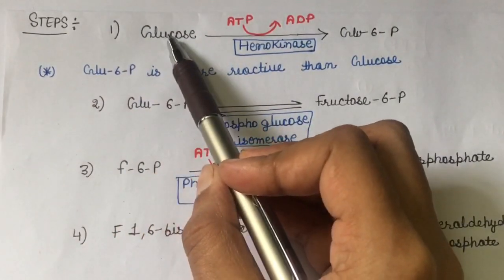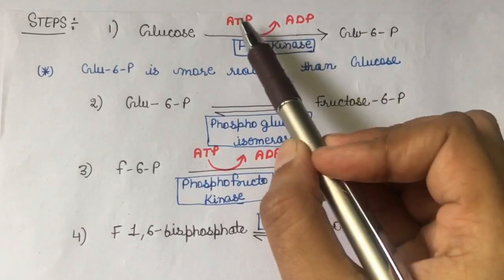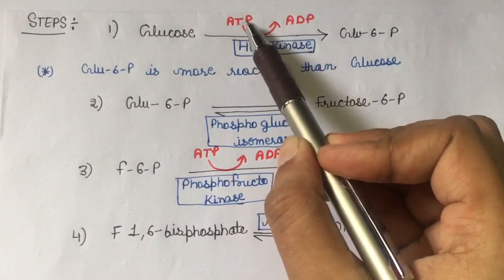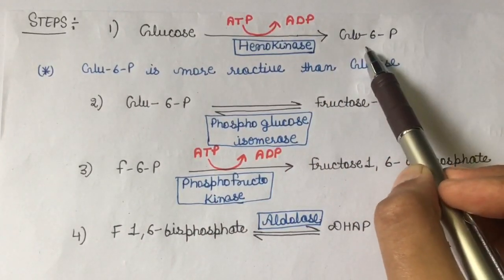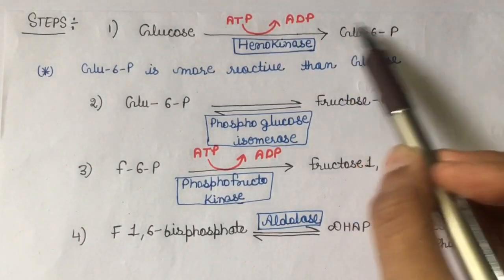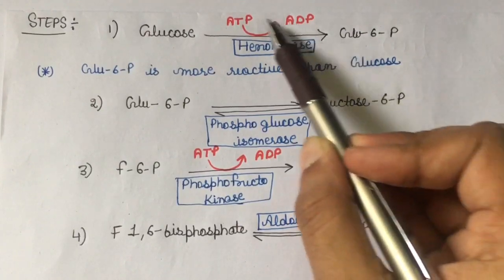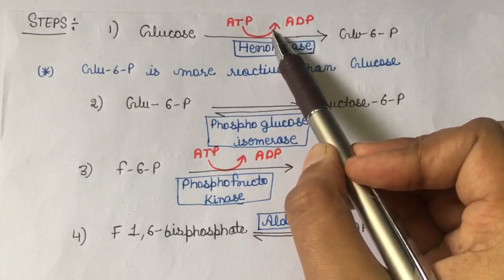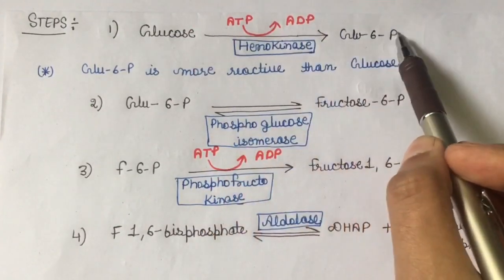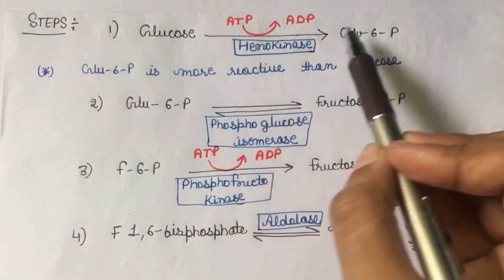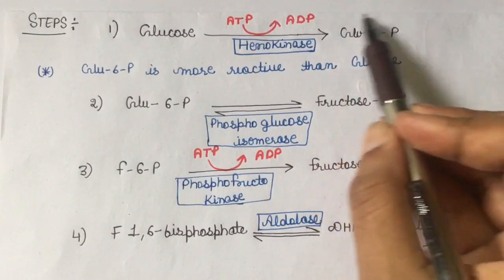In the very first step, glucose is converted into glucose-6-phosphate with the help of the enzyme hexokinase, and here ATP is used. One phosphate from ATP is added to glucose, so it becomes glucose-6-phosphate — a phosphate is attached at the 6th carbon position of glucose. This is done by hexokinase, wherein hexo means 6, and kinases are enzymes that catalyze phosphorylation reactions, meaning they attach a phosphate onto the substrate. Glucose-6-phosphate is more reactive than glucose, and once glucose is phosphorylated it cannot leave the cell.